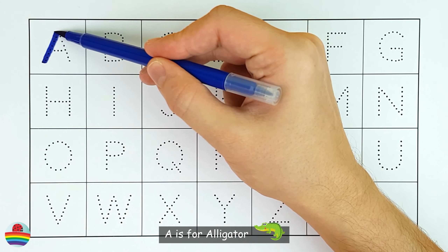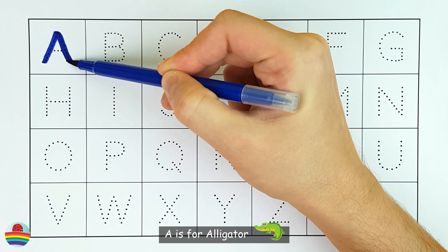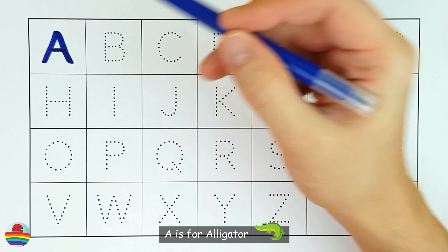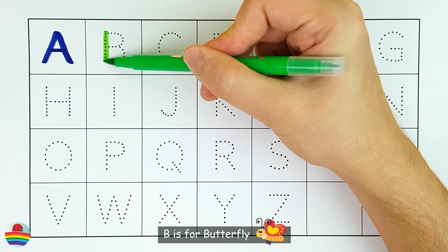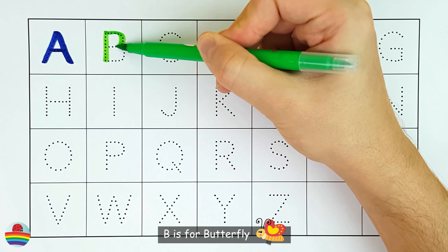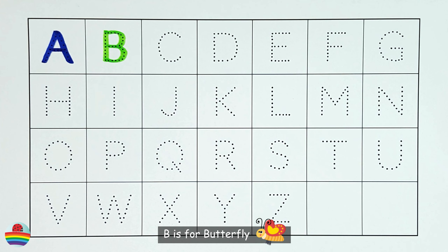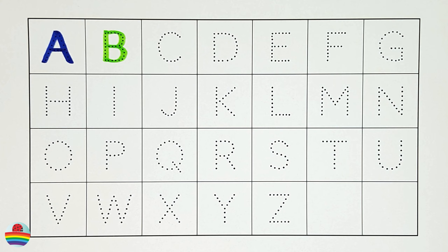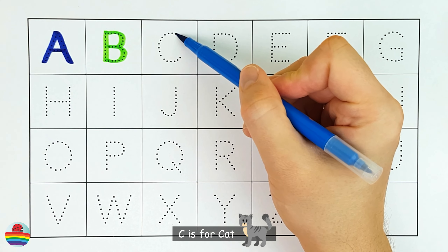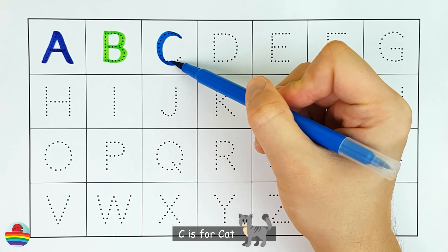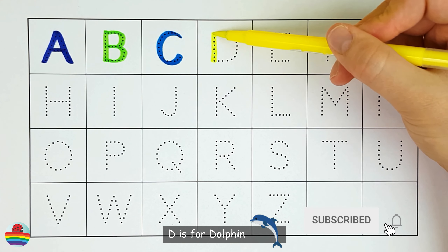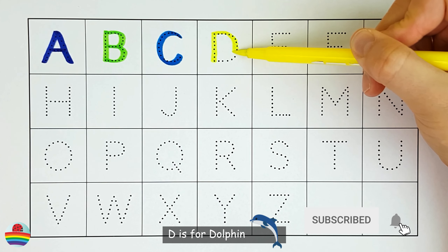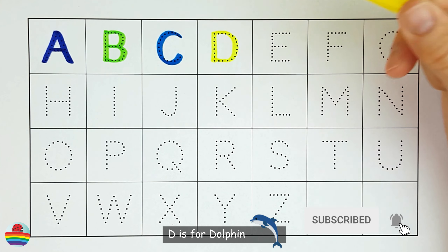A. A is for alligator. B. B is for butterfly. C. C is for cat. D. D is for dolphin.